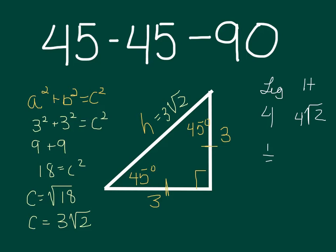If my leg had been 1/2, my hypotenuse would have been (1/2)√2. If my leg had been the square root of 3, my hypotenuse would have been the square root of 6.